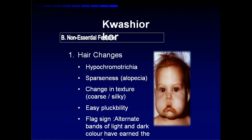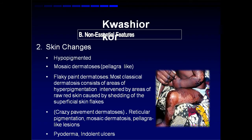There is a specific sign called the flag sign, where alternate dark and light bands appear in hair due to periods of good nutrition followed by poor nutrition and protein deficiency. Skin changes include depigmentation, hypopigmentation, mosaic dermatosis, and flaky paint dermatosis — the classical sign of Kwashiorkor — consisting of areas of hyperpigmentation with raw red skin in between caused by shedding of superficial skin. There is also crazy pavement dermatosis (reticular pigmentation) and pellagra-like lesions.